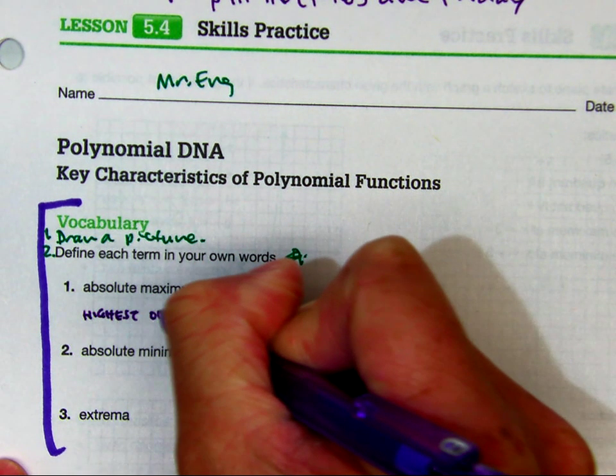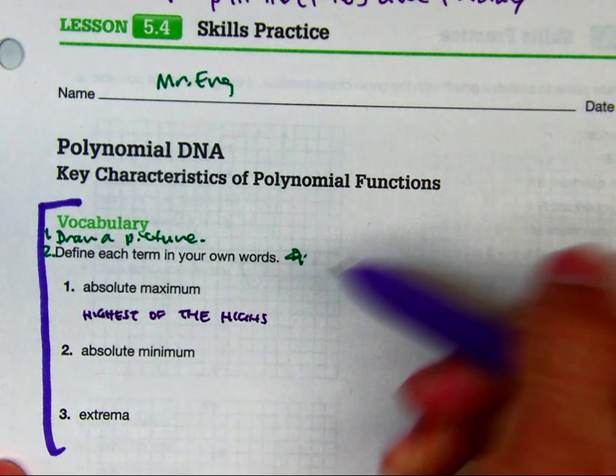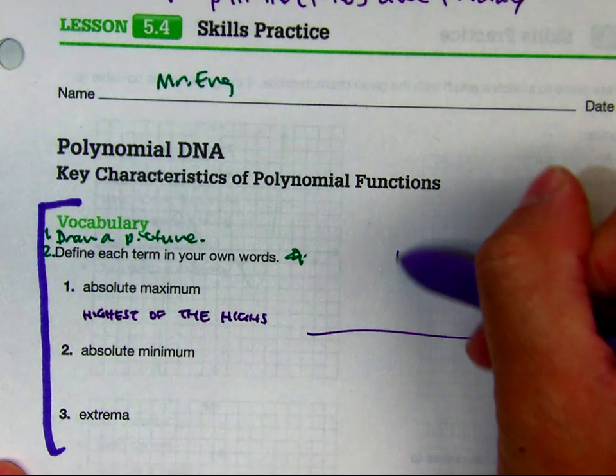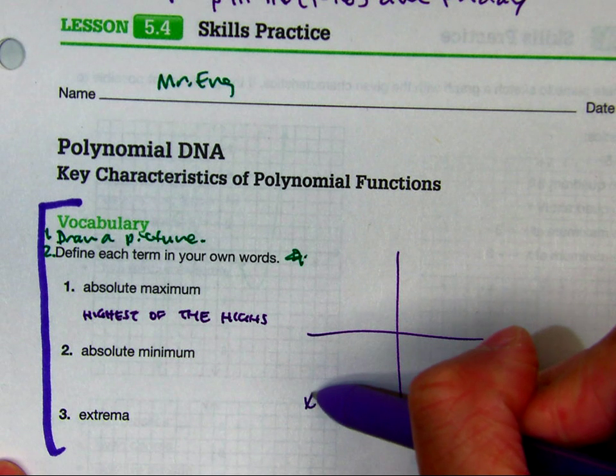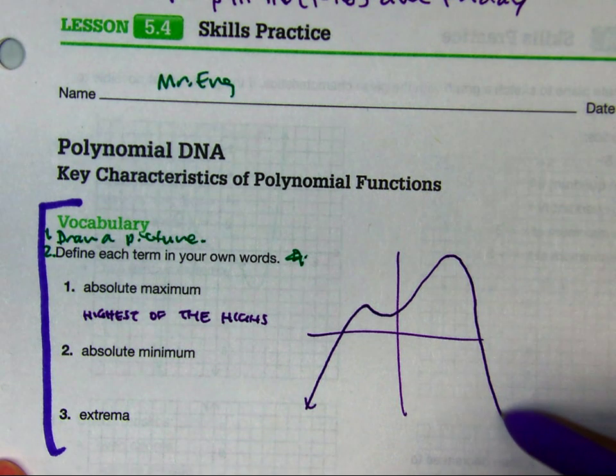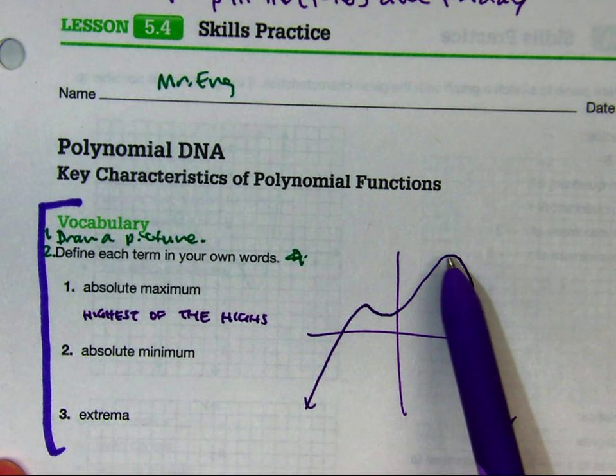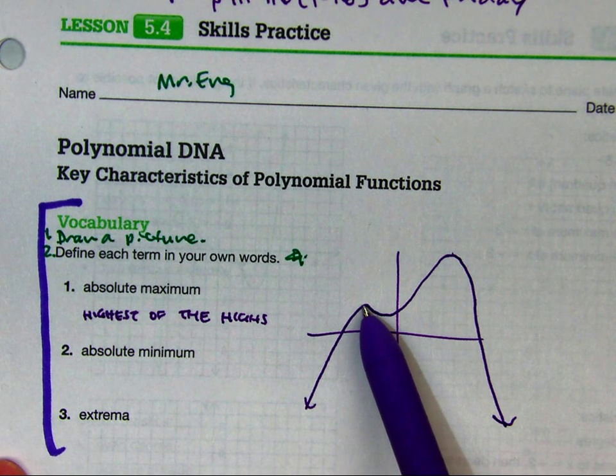Highest, highest of the highs, that's why I called it, because you could have a graph that looks something like this. Because this can be a maximum, this is a maximum, what kind of maximum does this one cost?